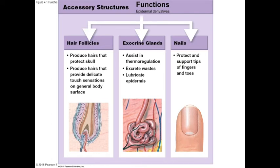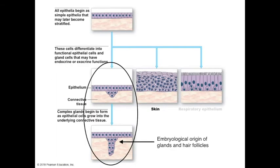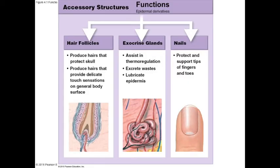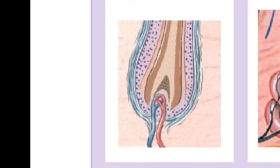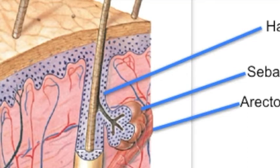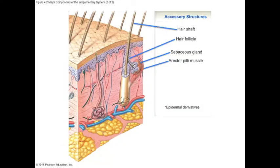Three accessory structures related to the epidermal layer are discussed here. Developmentally, epithelial cells grow inward into the dermis to form exocrine glands — this is how sweat glands, sebaceous glands, and hair follicles develop. Hair follicles cover most of the body, and the visible hair shaft is analogous to the stratum corneum: it is a shaft of keratinized dead cells, though the keratin forming hair is slightly different.